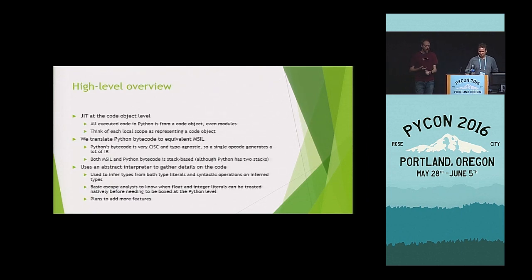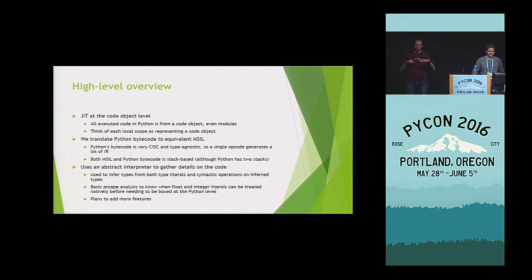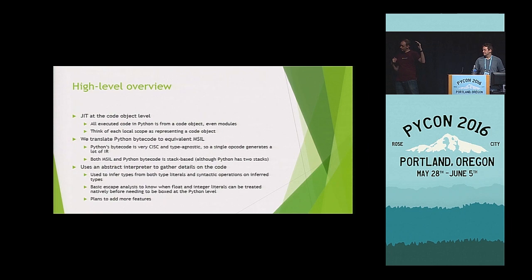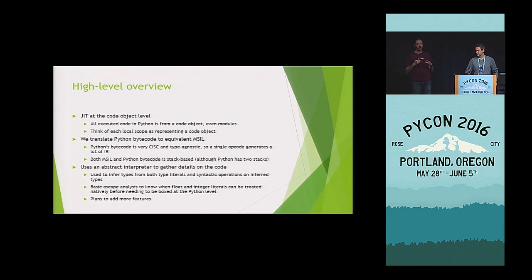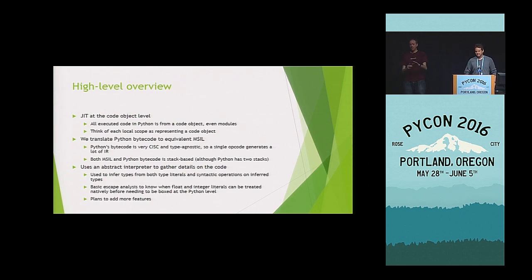So how do we do this? From a high-level overview, we do a JIT at the object level — at the code object level — which gives us exposure to basically anything you might think of as a scope in Python, so anything within a function or method. We use MSIL, which is core CLR's intermediate language representation, as what we compile to. Basically we take a code object, take all the Python bytecode, run an abstract interpreter over that bytecode, and do things such as follow types through, figure out how long something stays like a native int before we lose track of it and have to box it.